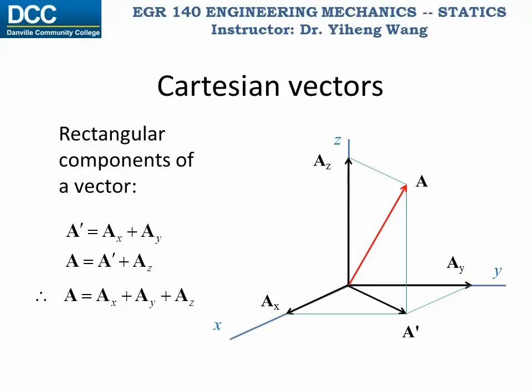So if we transfer an arbitrary vector a into an established Cartesian coordinate system, with the tail of the vector at the origin, then we can first apply the parallelogram law to resolve vector a into two component vectors: a_z that falls along the z axis, and a_prime that falls within the xy plane. Then we can apply the parallelogram law again to resolve a_prime into two components, a_x along the x axis, and a_y along the y axis. We can prove that a equals a_x plus a_y plus a_z, and therefore a_x, a_y, and a_z are the three rectangular components of vector a.